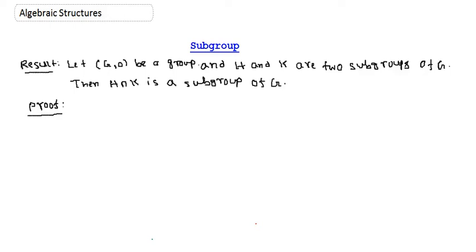We are going to see the following results. If we have a group G and we have two subgroups — one is H and another is K — suppose we have a group G and two subgroups H and K.